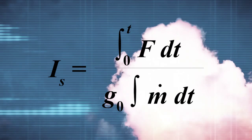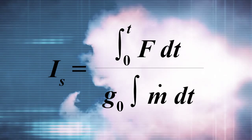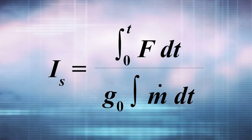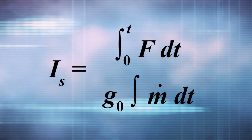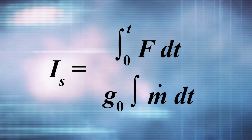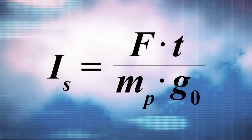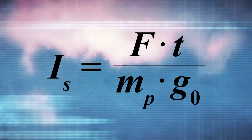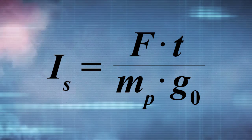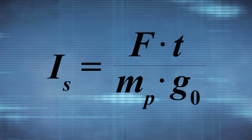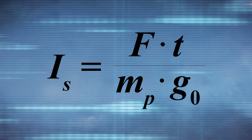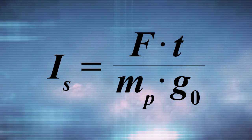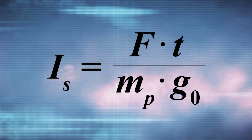Integrated over time, where I sub S is the specific impulse, G sub 0 is the acceleration due to gravity, M dot is the mass flow rate, and T is time. If you assume constant thrust and mass flow rate, and M sub P is the total propellant mass, then the equation can be simplified to dividing the thrust multiplied by the burn time, divided by the propellant mass multiplied by the acceleration due to gravity.